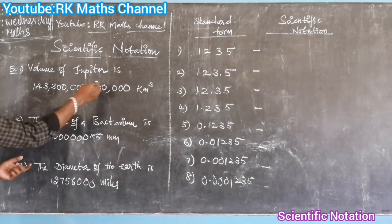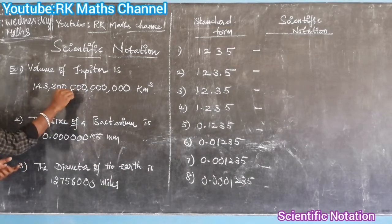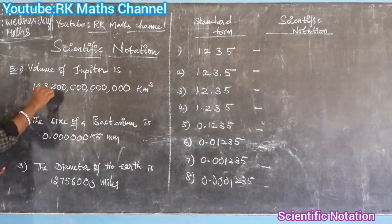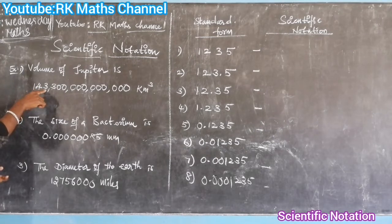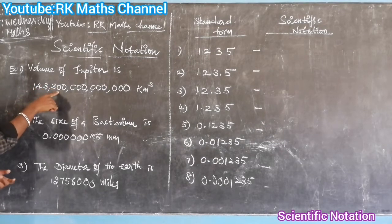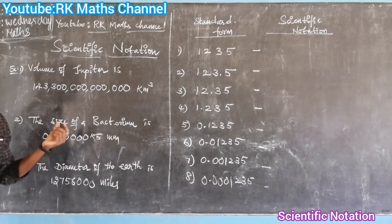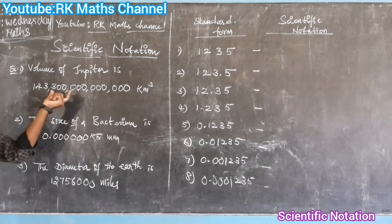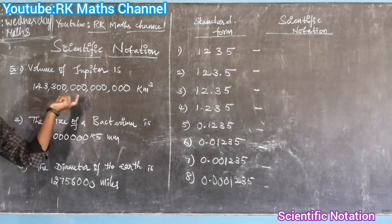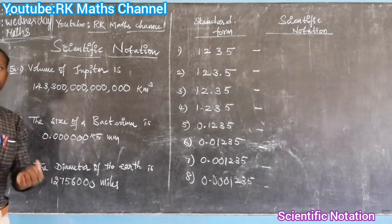Hundreds, thousands, ten thousand, hundred thousand, million, ten million, hundred billion, billion, ten trillion, hundred trillion — 143 trillion 300 billion. That is the size of Jupiter.